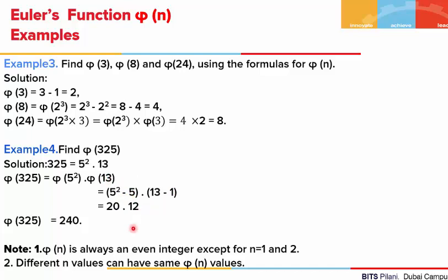Two things we have to always remember. First, phi(n) is always an even integer except when n is 1 or n is 2. We will see phi(1) is always 1 and phi(2) is also 1. So leaving these two numbers, all other phi values will always be even. Second, for different values of n, we can have the same phi(n) values.